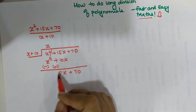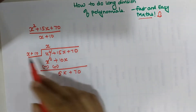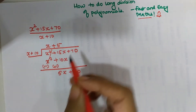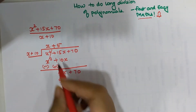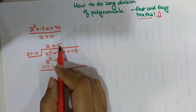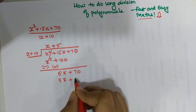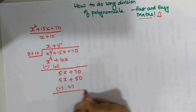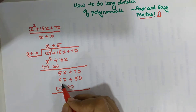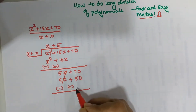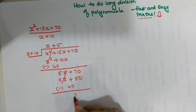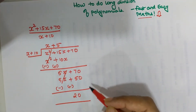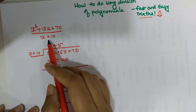Now I need 5x, so I will multiply x by 5 and write plus 5 in the quotient. I get 5x because I multiplied 5 with x. Then multiplying 5 with 10 gives plus 50. Again we subtract so the signs change: 5x minus 5x is cancelled and 70 minus 50 gives 20. In this way you can do the long division of this fraction of polynomials.